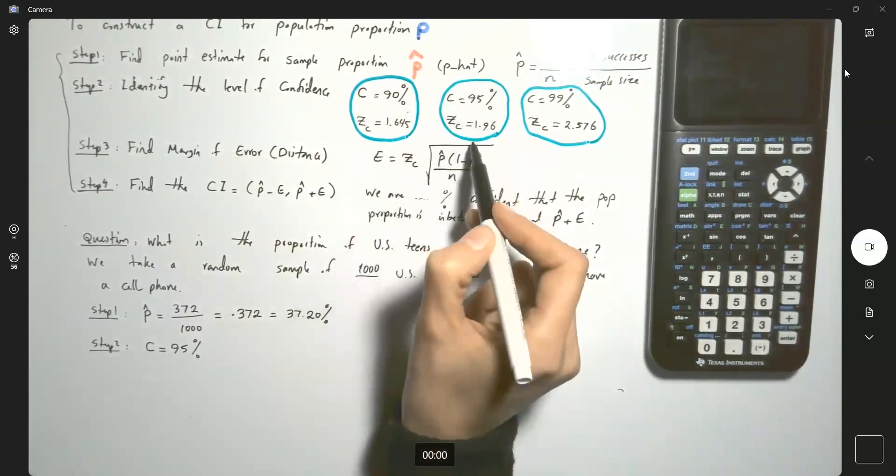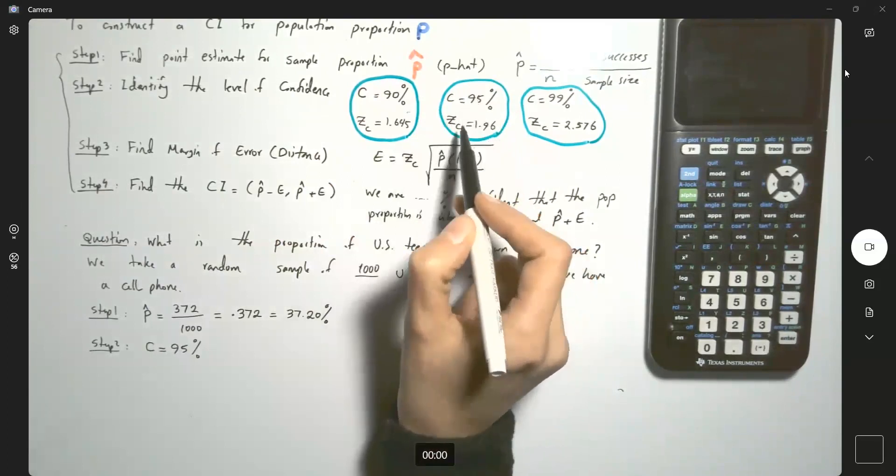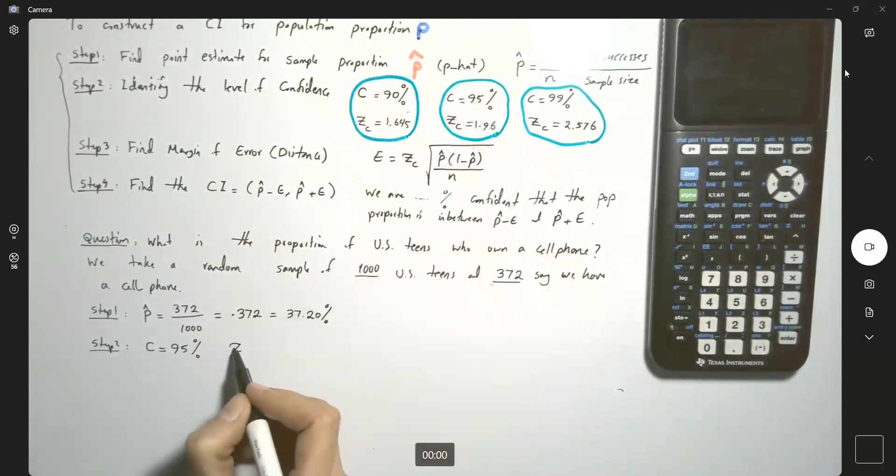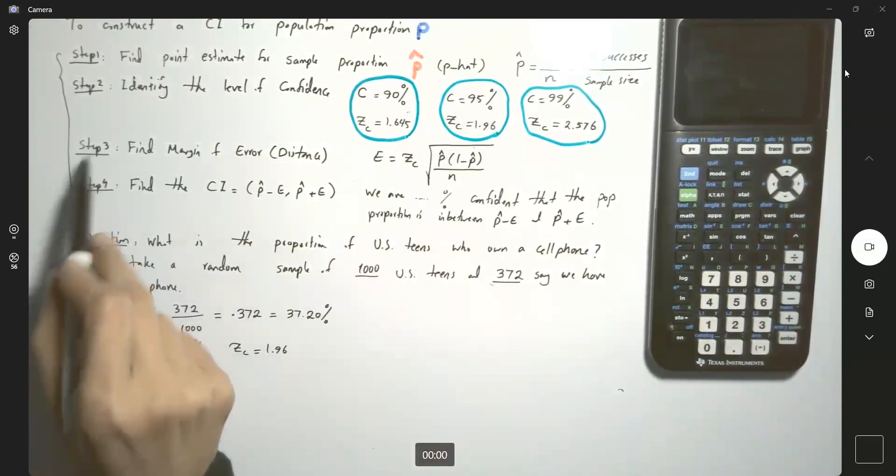So Zc, as you memorized before, is 1.96. Zc is 1.96. It helps us to go to step three.